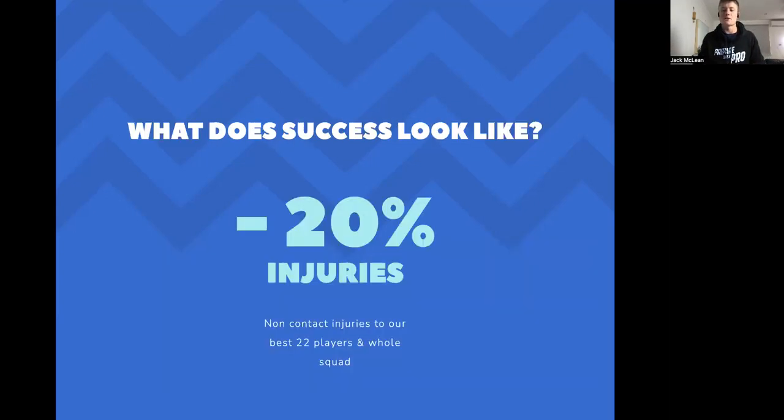What does success look like for this program? Success will be simply reducing the amount of non-contact injuries by 20%, not only in the whole squad, but also for our best 22 to improve our performance for the upcoming season. This is a target that the High Performance Department are confident we can achieve by looking at the research, and if the club is willing to invest in the extra staff members and technology to help us facilitate this program, we're confident we can get this result for the team, and we feel that this will go a long way in helping us perform better as a team and as a squad going into the upcoming season.